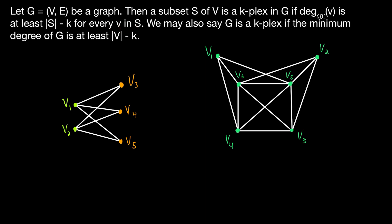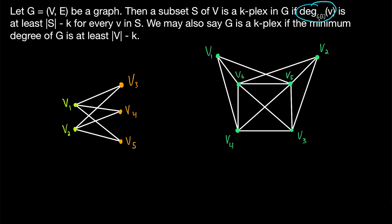What this is saying is that if we take a subset of the vertex set of a graph, then consider the subgraph induced by that vertex set — that's this notation, the subgraph of g induced by the vertex set s — and remember that just consists of all vertices in s and all edges that join them in the graph g. So if in that subgraph every vertex has a degree of at least the cardinality of s minus k, then s is a k-plex. Similarly, as with cliques, we may call a subset of vertices a k-plex, but we can also call a graph a k-plex. So we may say that a graph g is a k-plex if the minimum degree of g is at least the cardinality of the vertex set of g minus k. Note that 'at least' is just another way of saying greater than or equal to.